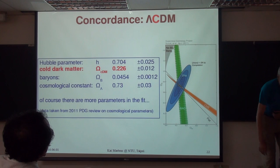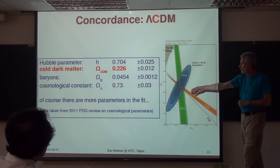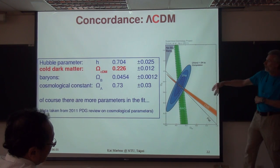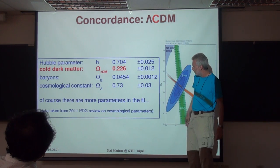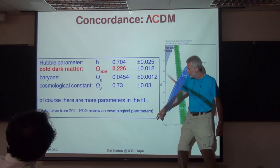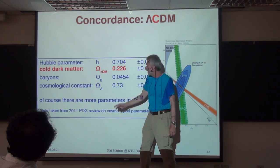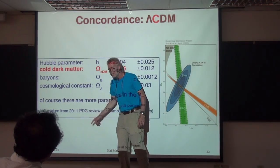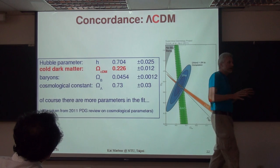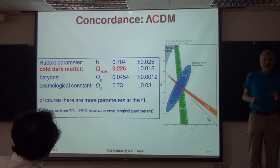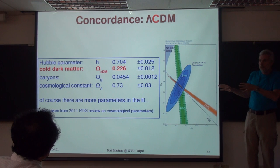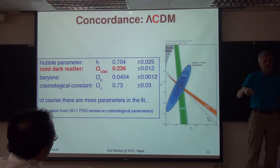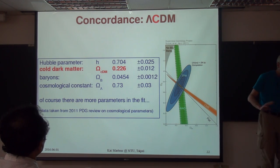So here are the famous standard parameters - from 2011, so I should have pulled out the newest numbers from the latest particle data group. But you can do that yourself - go to the particle data group, look at this. It's really interesting stuff and you will find a lot of background information there about how all this fits together.